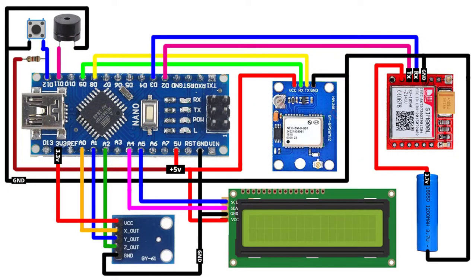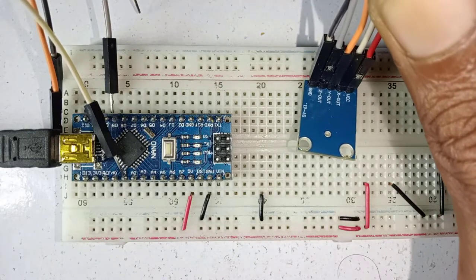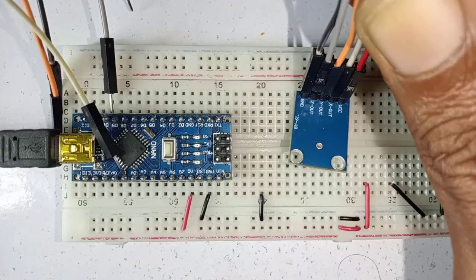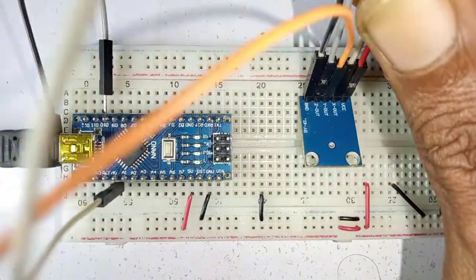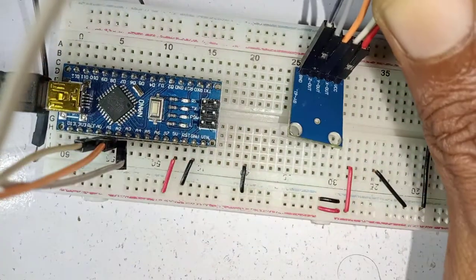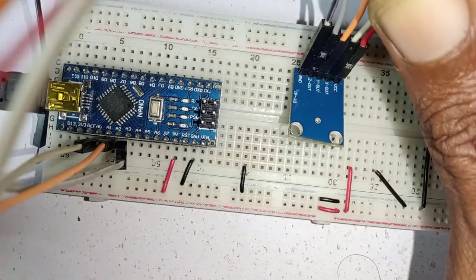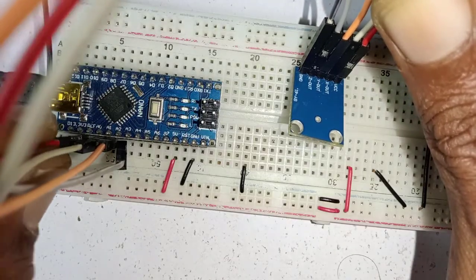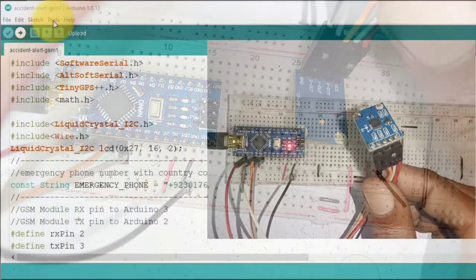Next, let's have a look at the wiring diagram — use this diagram as a reference to connect all the components. First, connect the ADXL335 accelerometer to the Arduino Nano. Connect the accelerometer X, Y, and Z pins to Arduino pins A0, A1, and A2. Connect the accelerometer VCC pin to Arduino 3.3V and ground to ground.